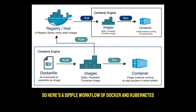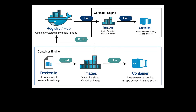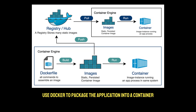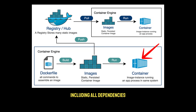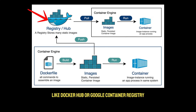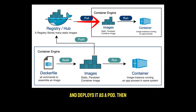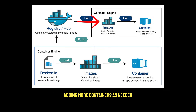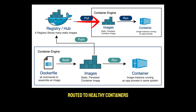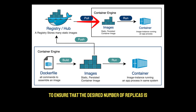Here's a simple workflow of Docker and Kubernetes: developers use Docker to package the application into a container including all dependencies; the Docker image is pushed to a container registry like Docker Hub or Google Container Registry; Kubernetes pulls the image from the registry and deploys it as a pod; Kubernetes then monitors traffic and scales pods horizontally, adding more containers as needed, routes incoming traffic to healthy containers, and automatically restarts any crashed container to ensure the desired number of replicas is running.